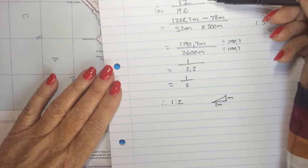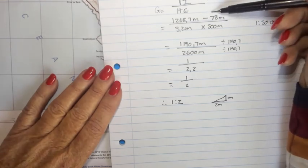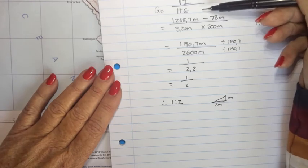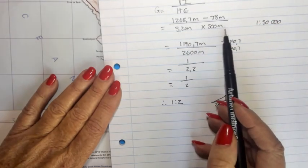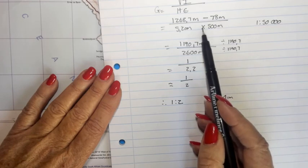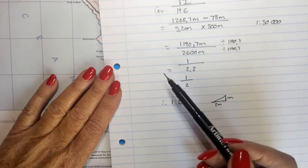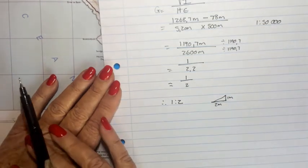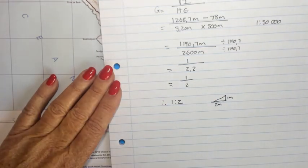To summarize: the vertical interval is the difference in heights between the two points — you sometimes need to take an estimated guess of the height. The horizontal equivalent is the map distance between the two points multiplied by 500 meters, because height is indicated in meters and the horizontal equivalent also needs to be in meters.